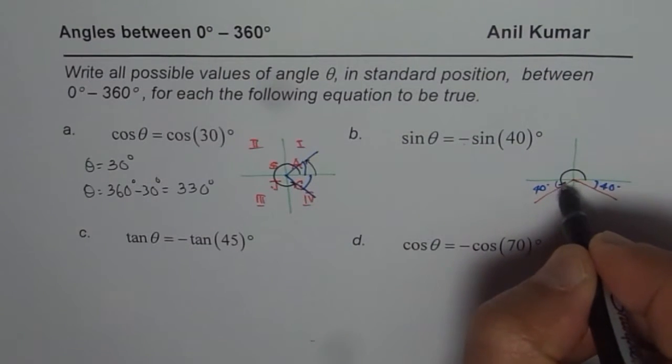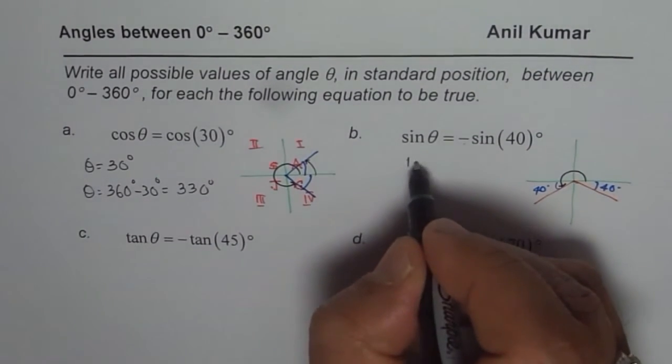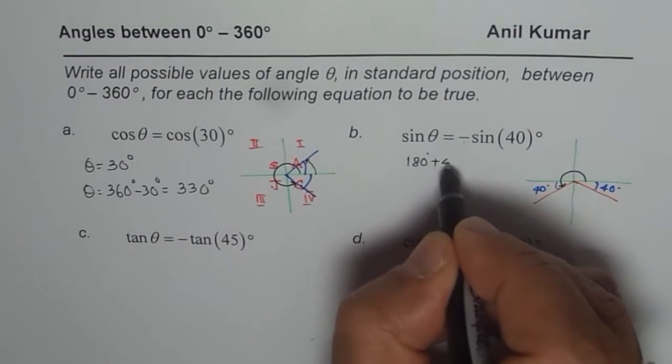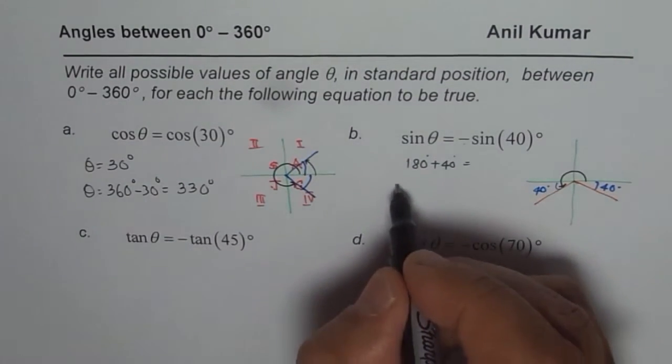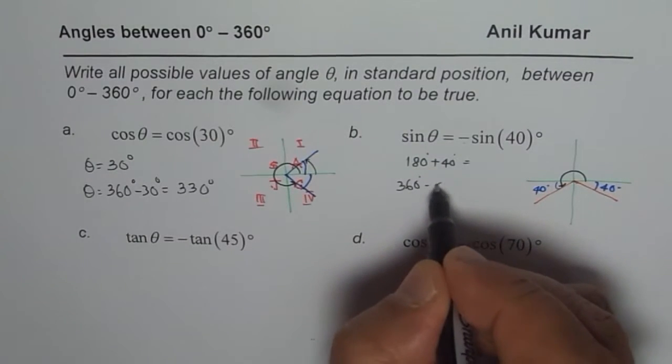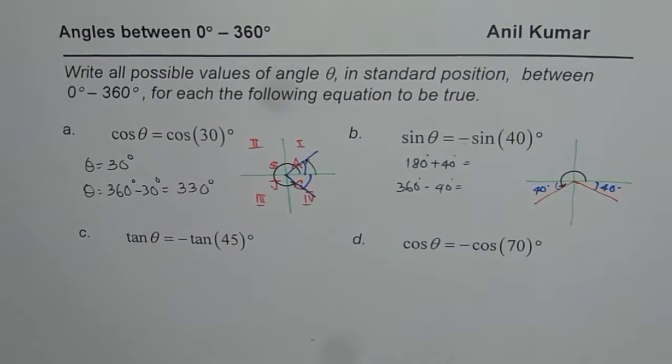So, if you go from here to there, 180 plus. So, one is 180 degrees plus 40 degrees. That is one solution. The other one is 360 degrees minus 40 degrees. You get the point.